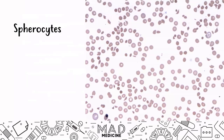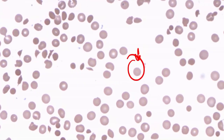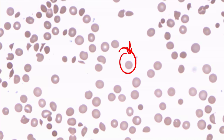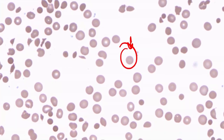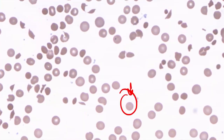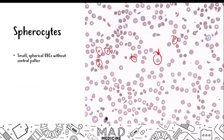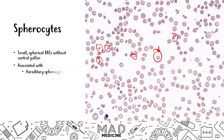Spherocytes are small spherical red blood cells without an area of central pallor. You can see a spherocyte has no central pallor — the middle has no decreased luminescence. Spherocytes are going to be associated with hereditary spherocytosis, but they're also associated with drug-induced hemolytic anemia. In a blood smear, you may also see schistocytes occurring alongside spherocytes.